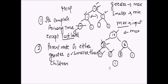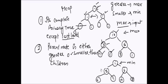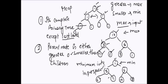Similarly, if I reverse things and make a min heap, the root or parent is smaller than its children at every level. The root of the min heap gives us the minimum element in the input. So these are the two properties of heap.